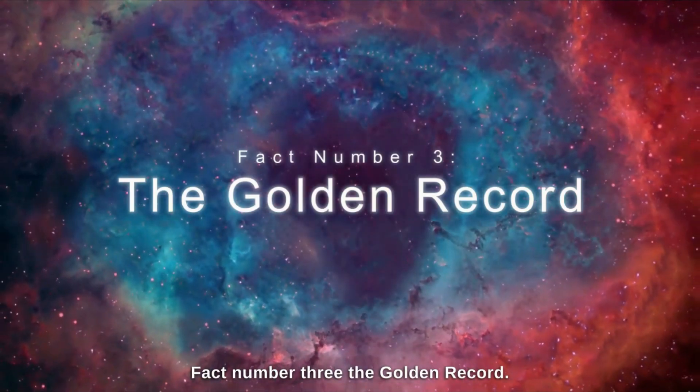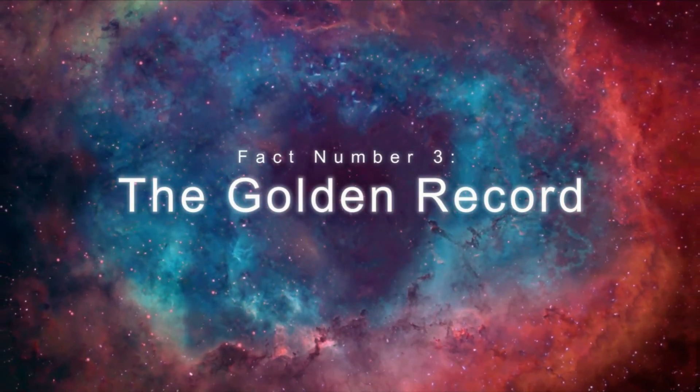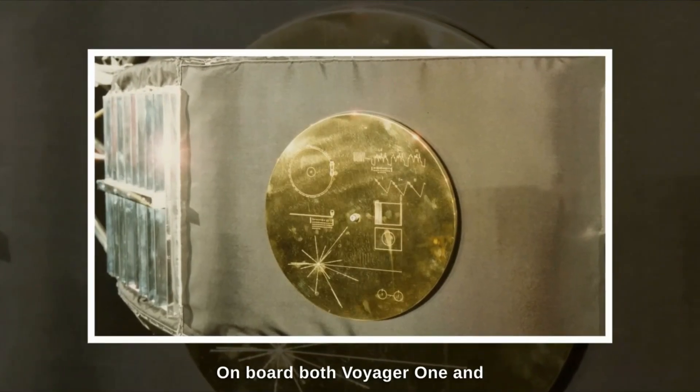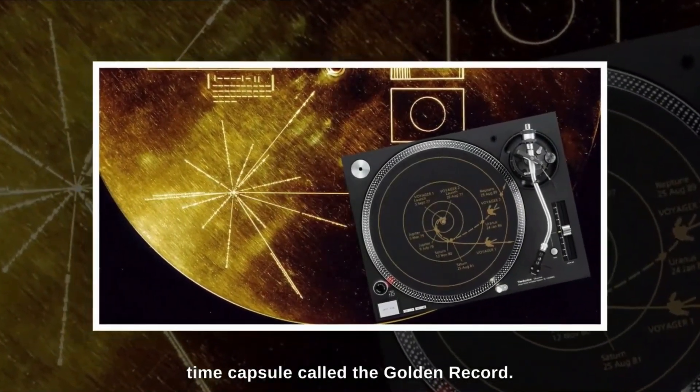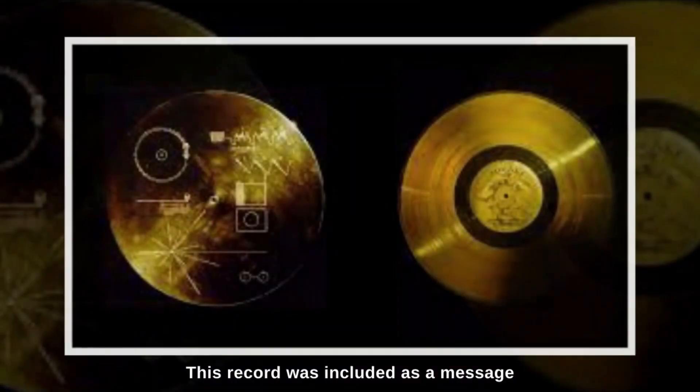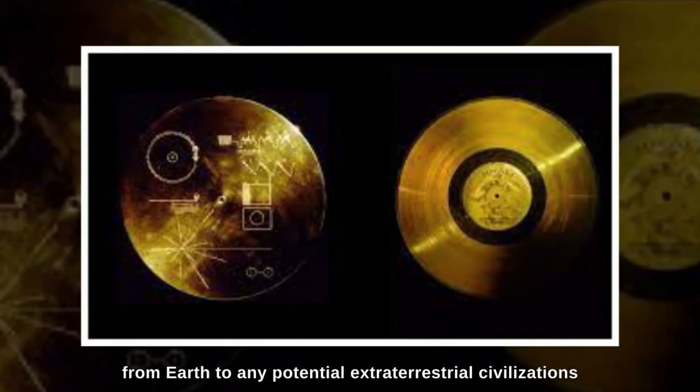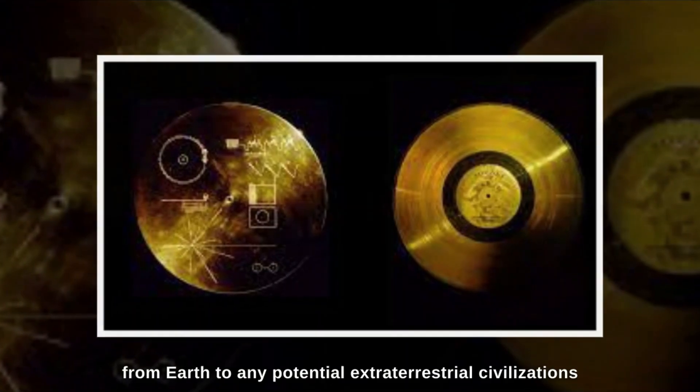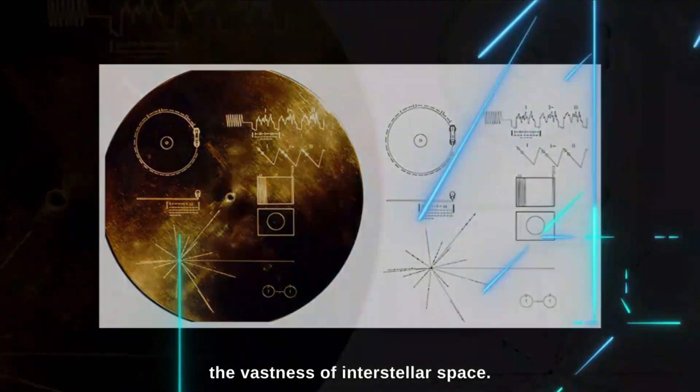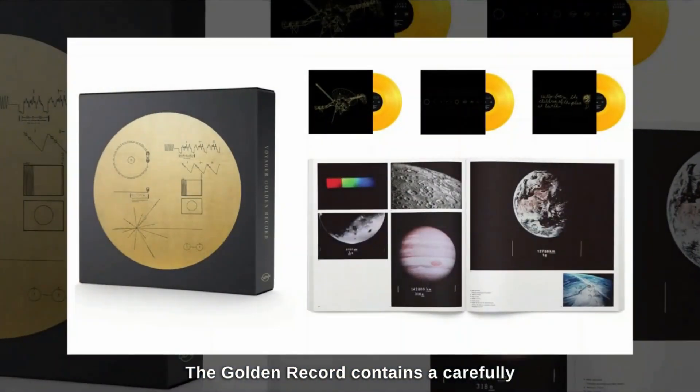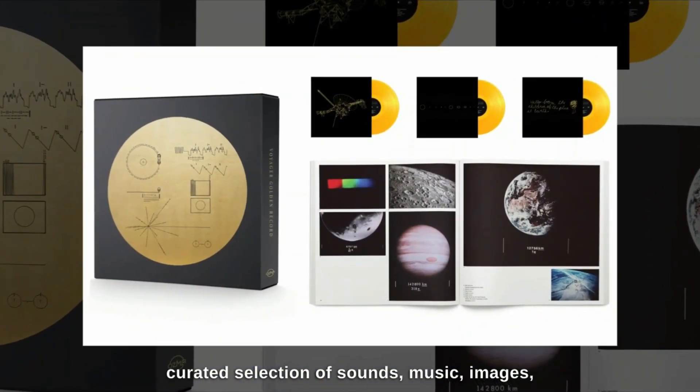Fact number 3. The Golden Record. Onboard both Voyager 1 and Voyager 2 spacecraft, there's a remarkable time capsule called the Golden Record. This record was included as a message from Earth to any potential extraterrestrial civilizations that might encounter the Voyager spacecraft in the vastness of interstellar space.